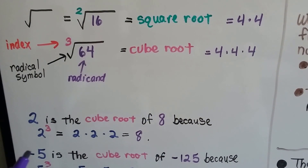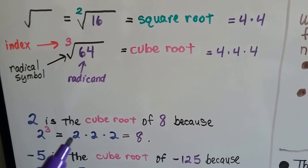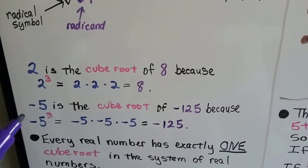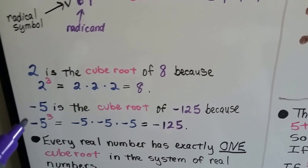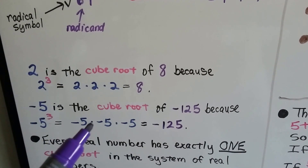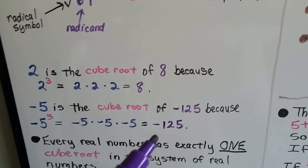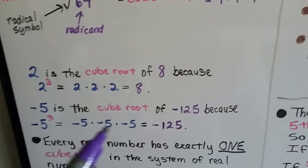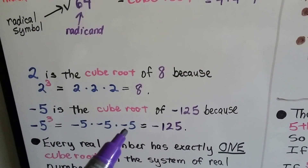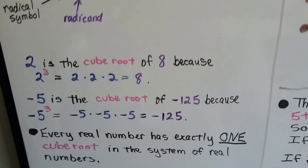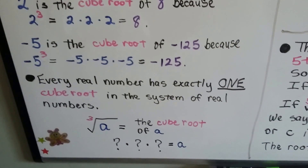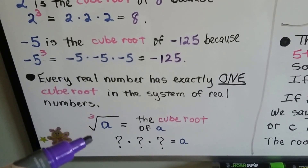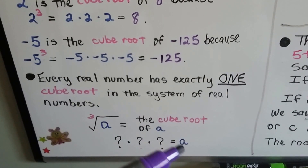2 is the cube root of 8 because 2 cubed is 2 times 2 times 2, which equals 8. Negative 5 is the cube root of negative 125 because negative 5 cubed — negative 5 times negative 5 times negative 5 — equals negative 125. And every real number has exactly one cube root in the system of real numbers. So if we've got the cube root of a, it just means something times something times something equals a.